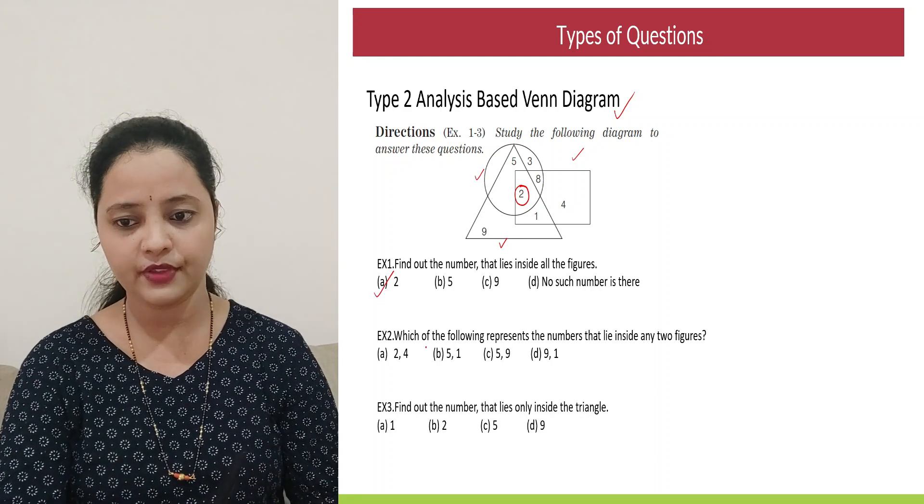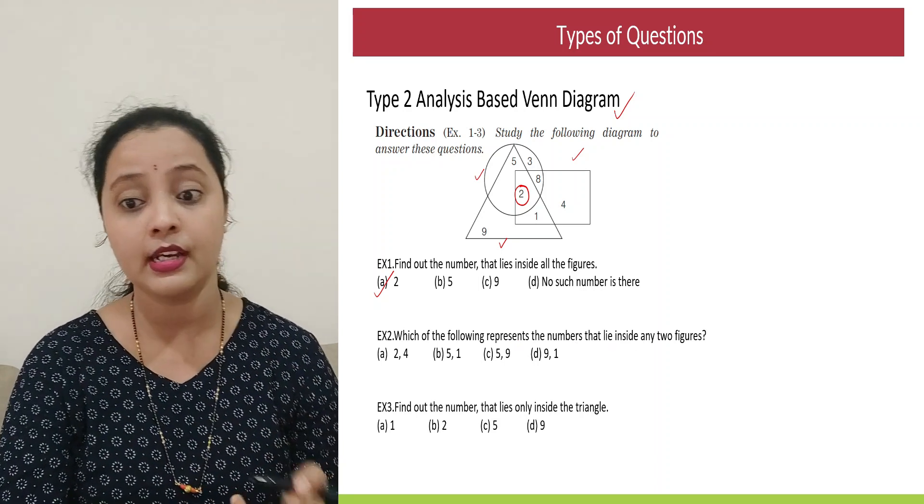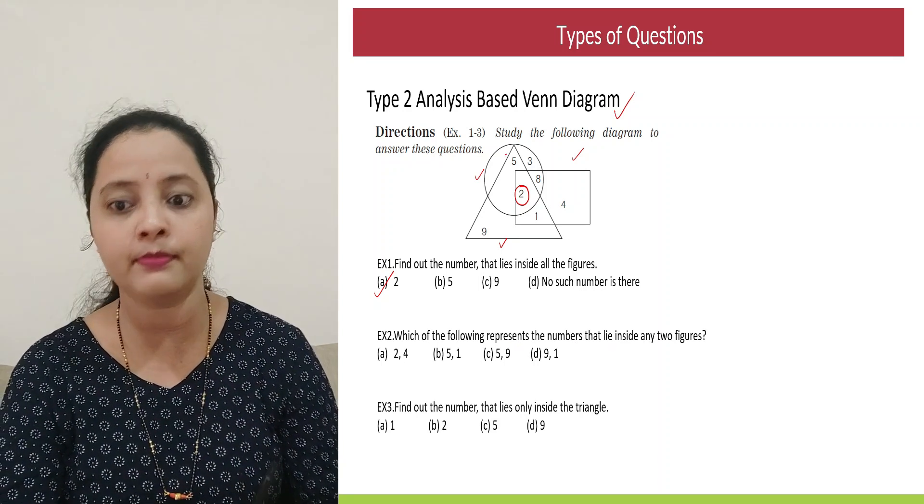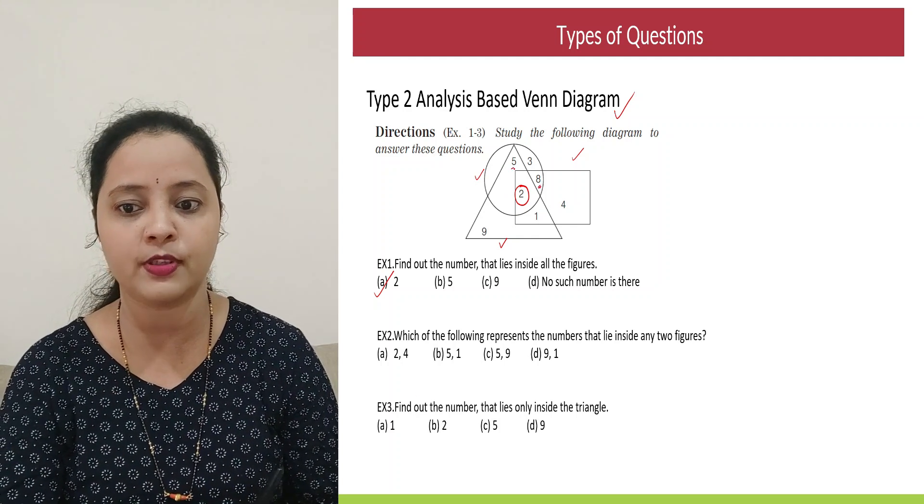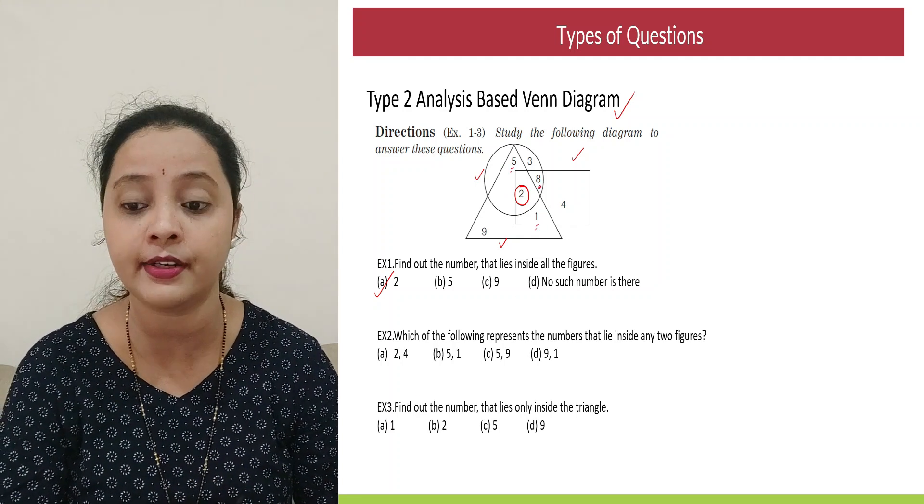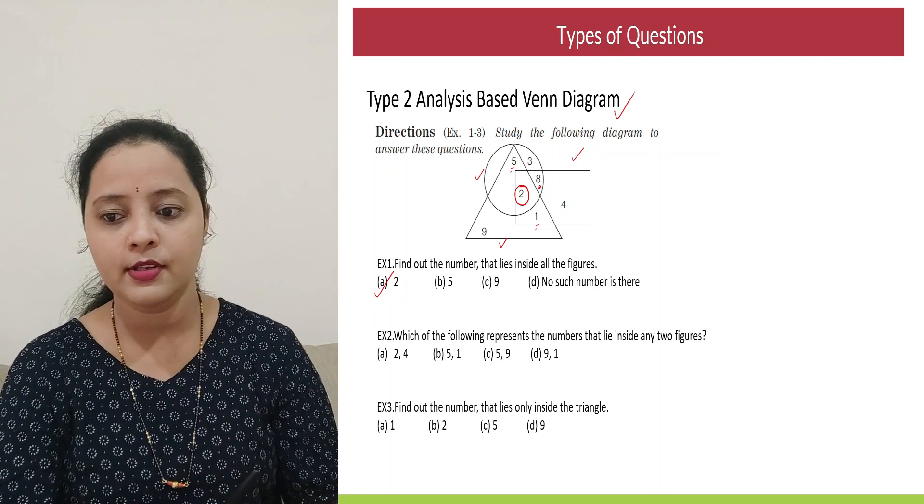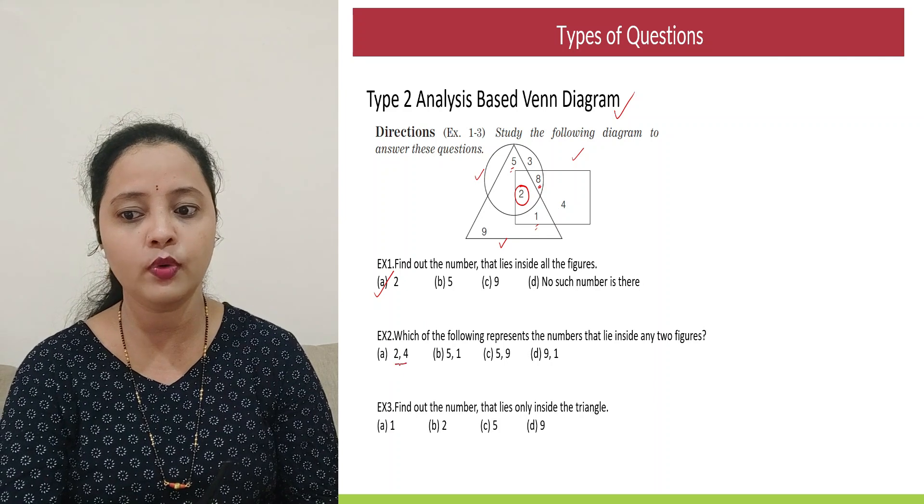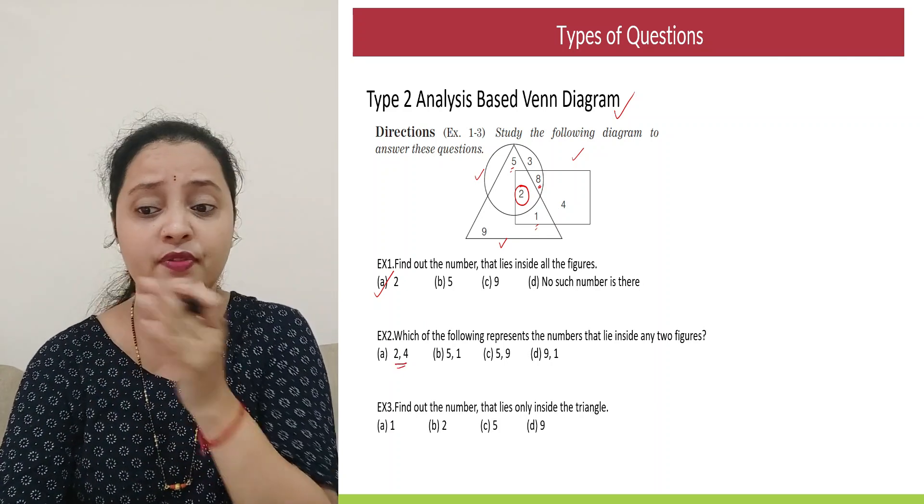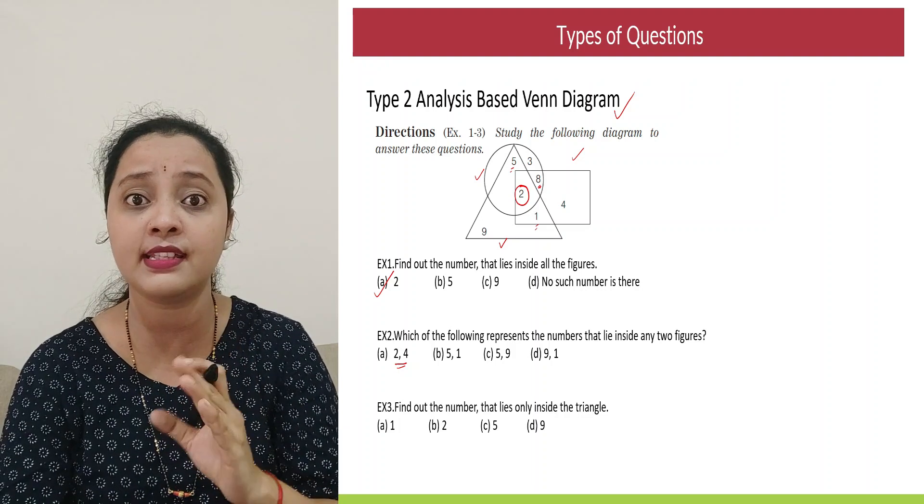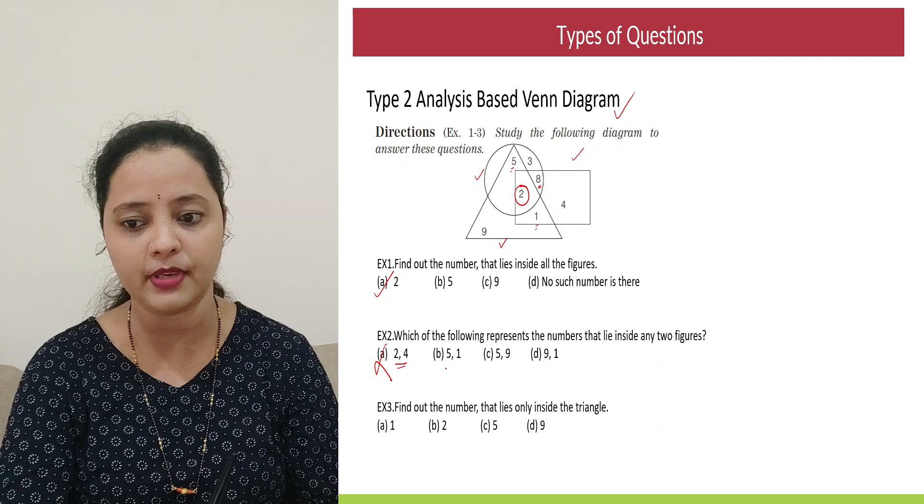Then the second one. Which of the following represents the number that lies inside any two figures? Now any two figures there are multiple numbers that are possible. Like this number 8 is possible, number 5 is possible, number 1 is possible. So here what we will do, we'll go with options and check which option is possible. So the first option they have given is 2 and 4. Now is 2 possible? Impossible. Because we have just seen 2 is the number which lies in all the three. So option A is not possible.